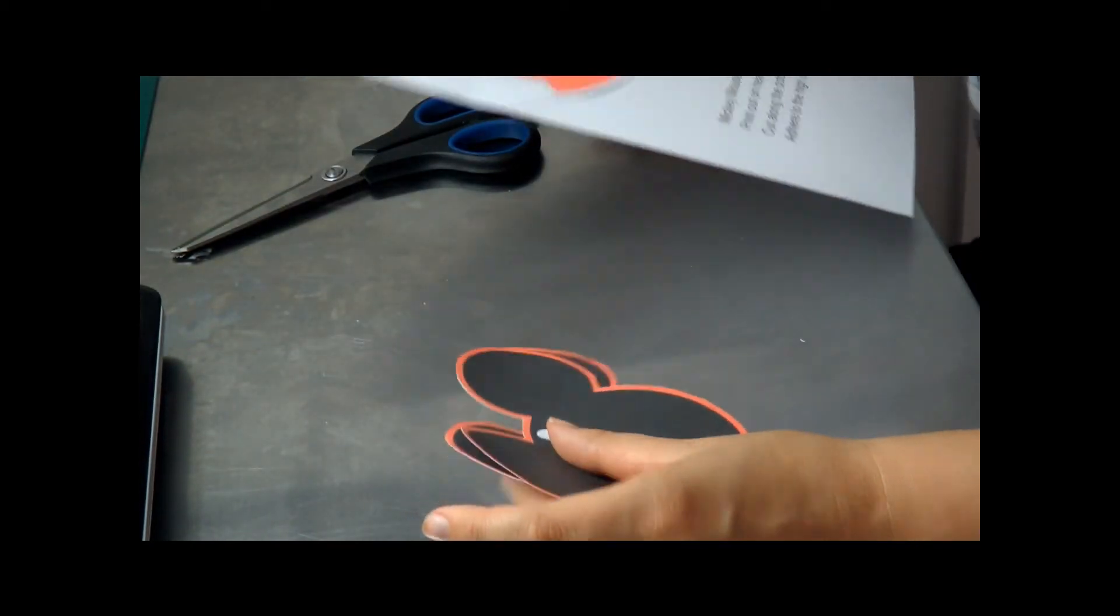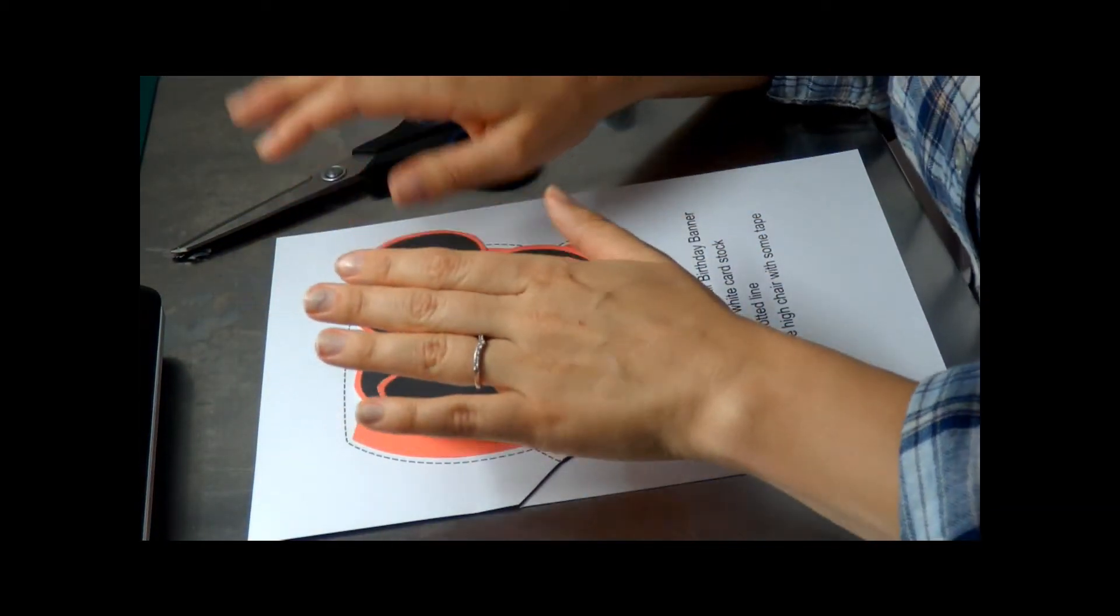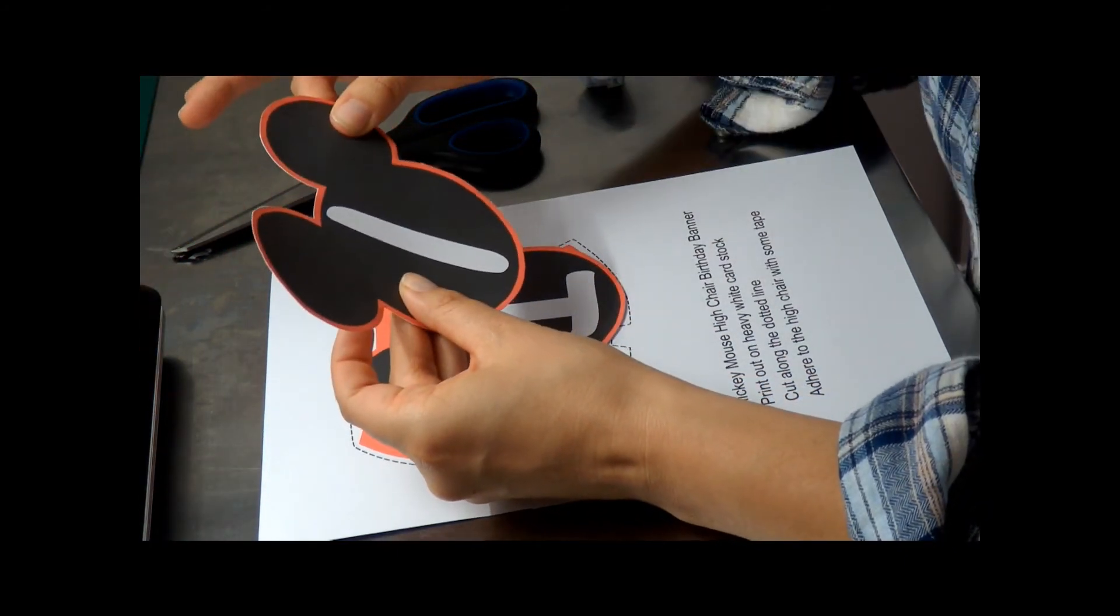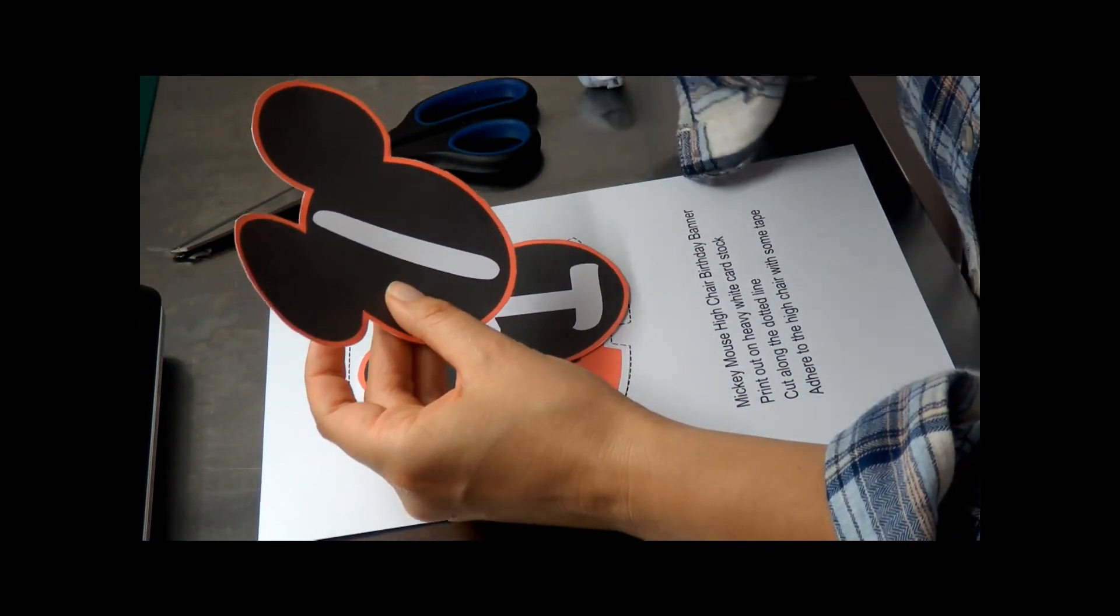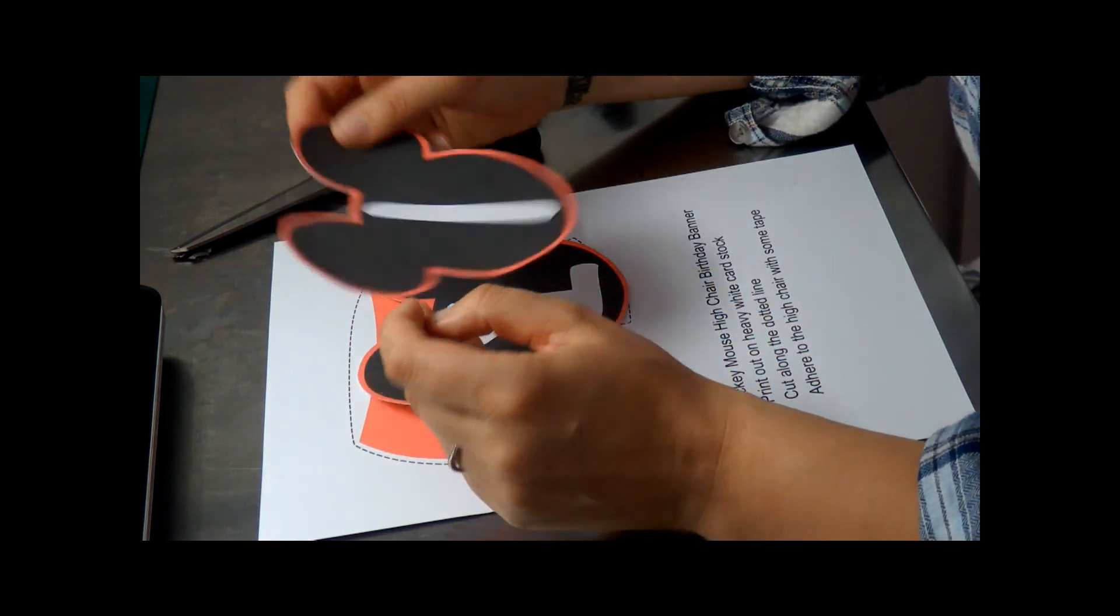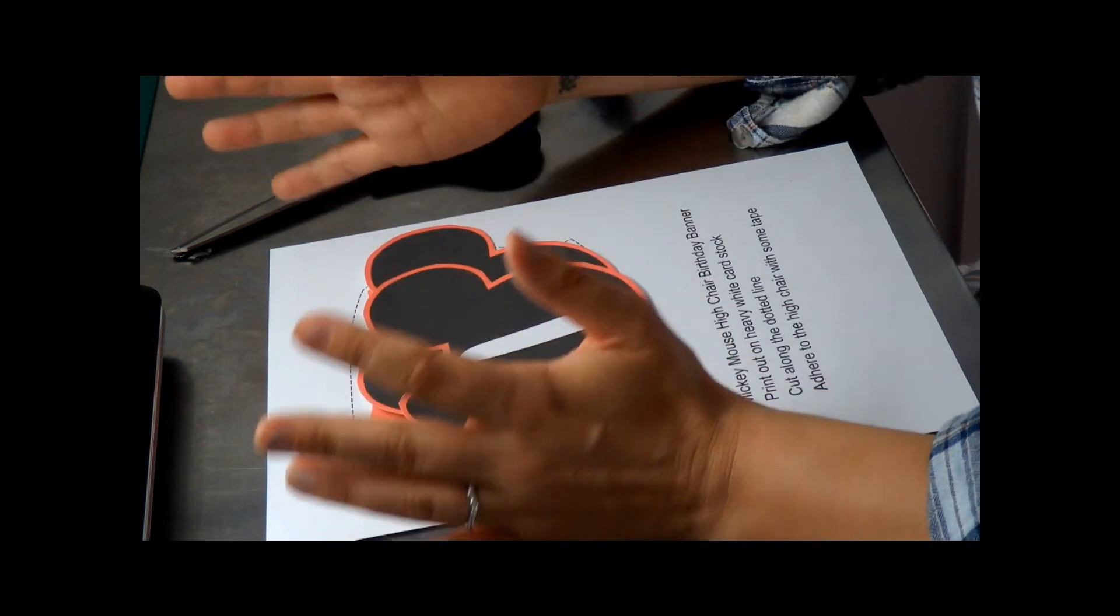You can also add a bit of character to your high chair banner by punching some holes on either side of the images and threading through some ribbon and tying a bow on either side. That's just a quite a cute idea and that's it.